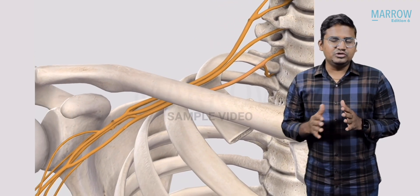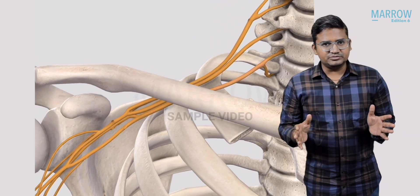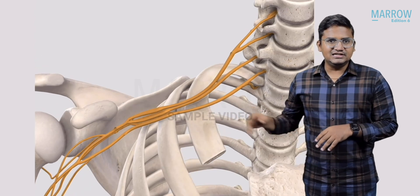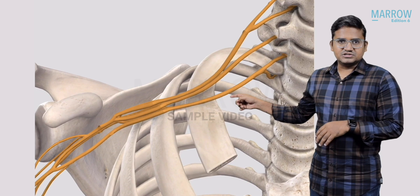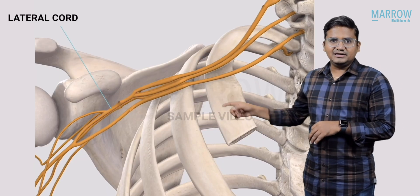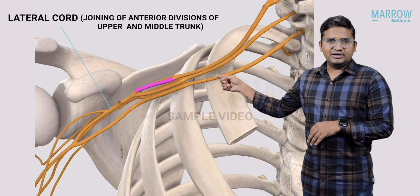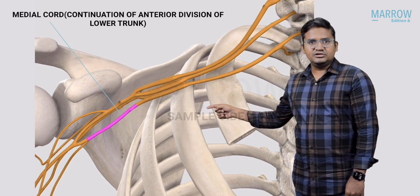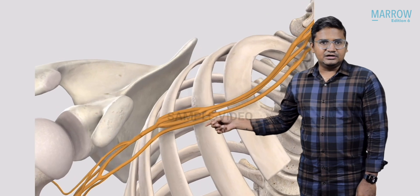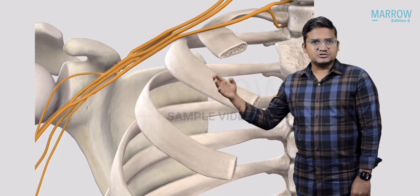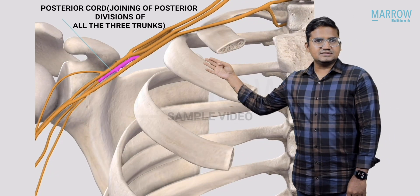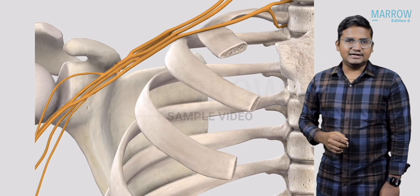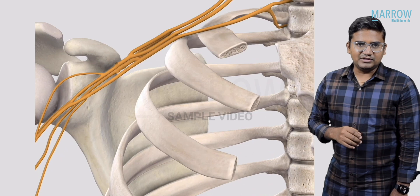Now these trunks divide into anterior division and posterior division. We are going to remove the clavicle so you can see the divisions. The lateral cord is formed by the anterior division of the upper trunk and middle trunk. The medial cord is formed by the anterior division of the lower trunk, and we also have the posterior cord. So three cords of the brachial plexus.